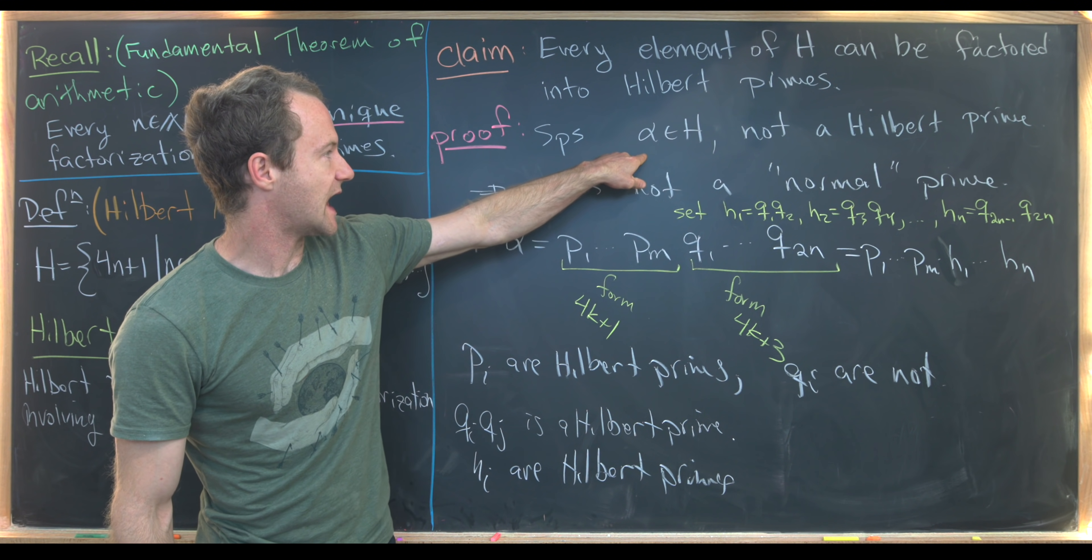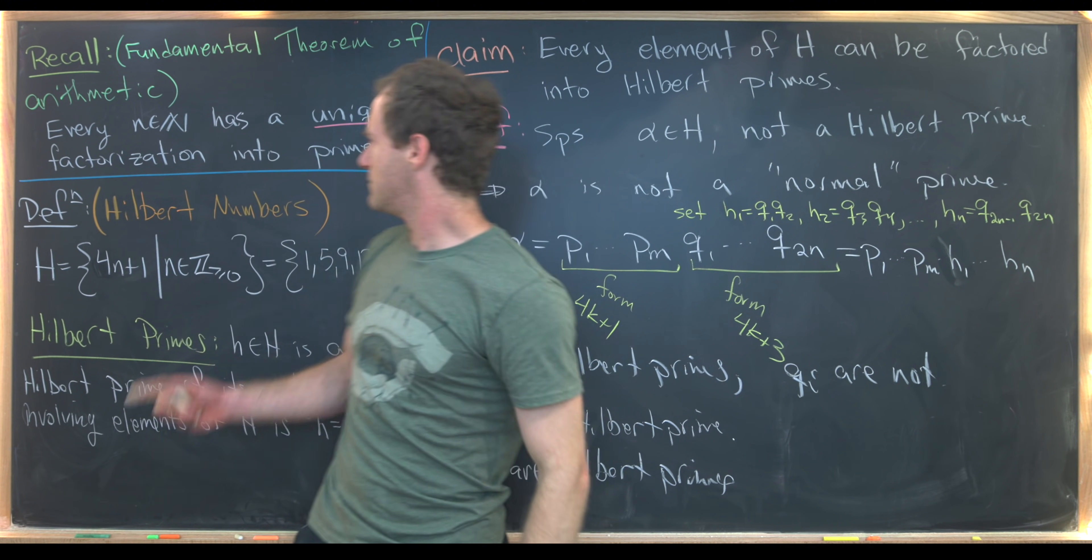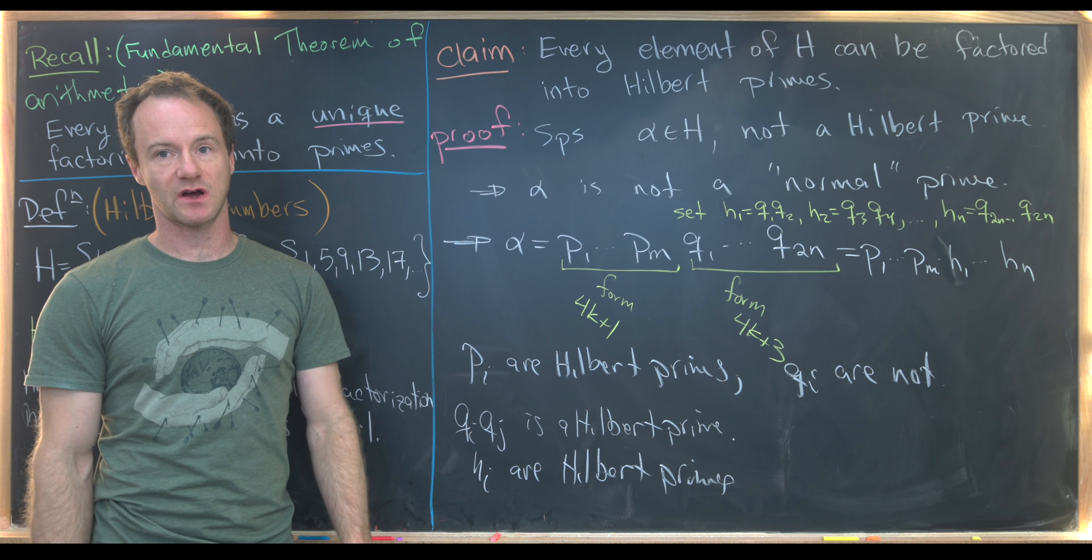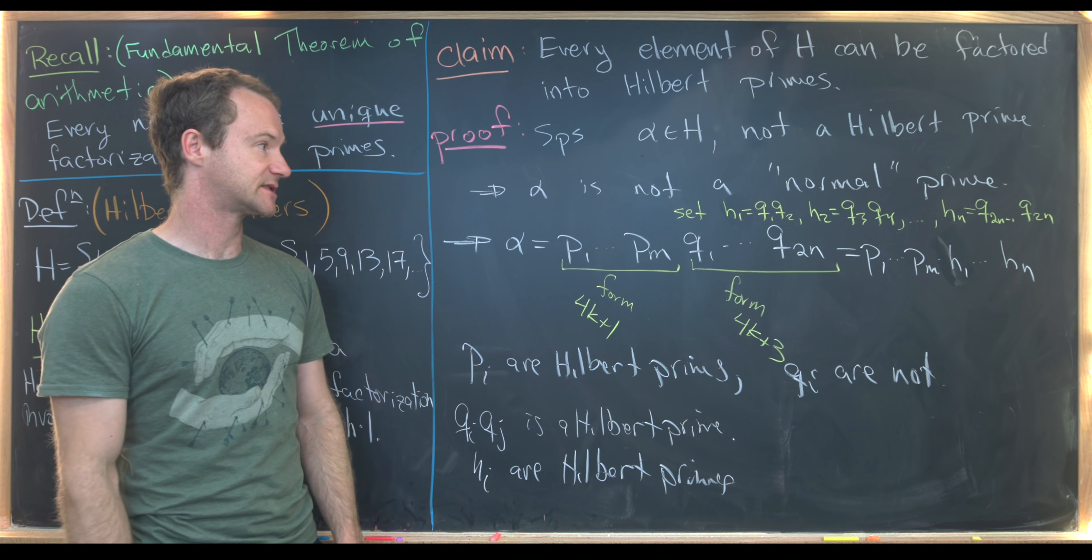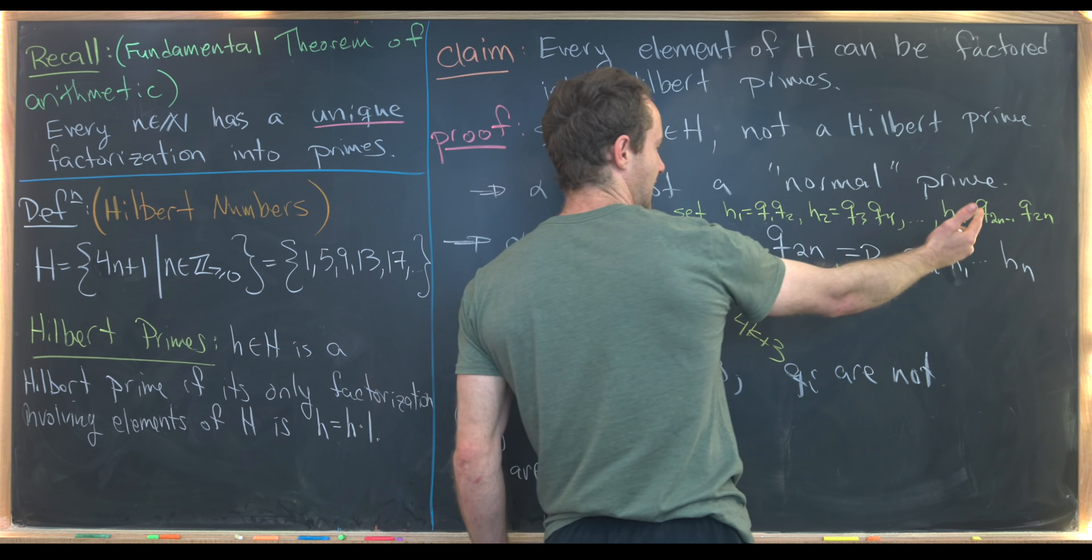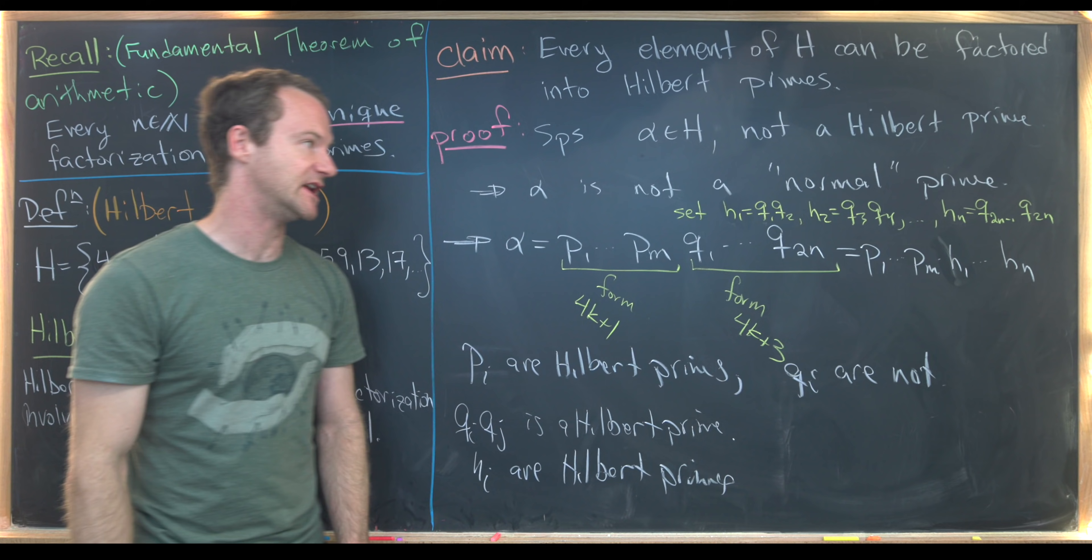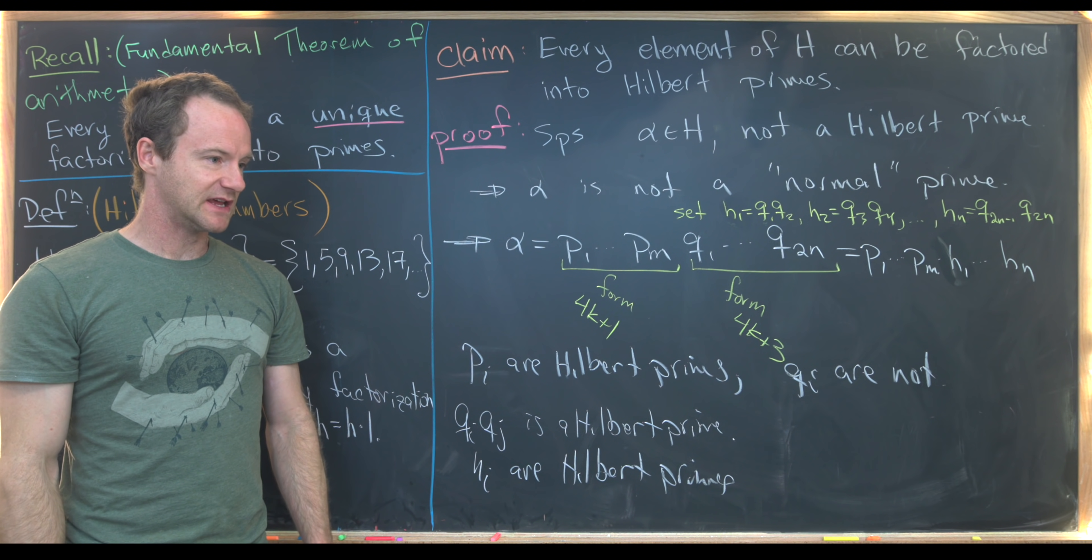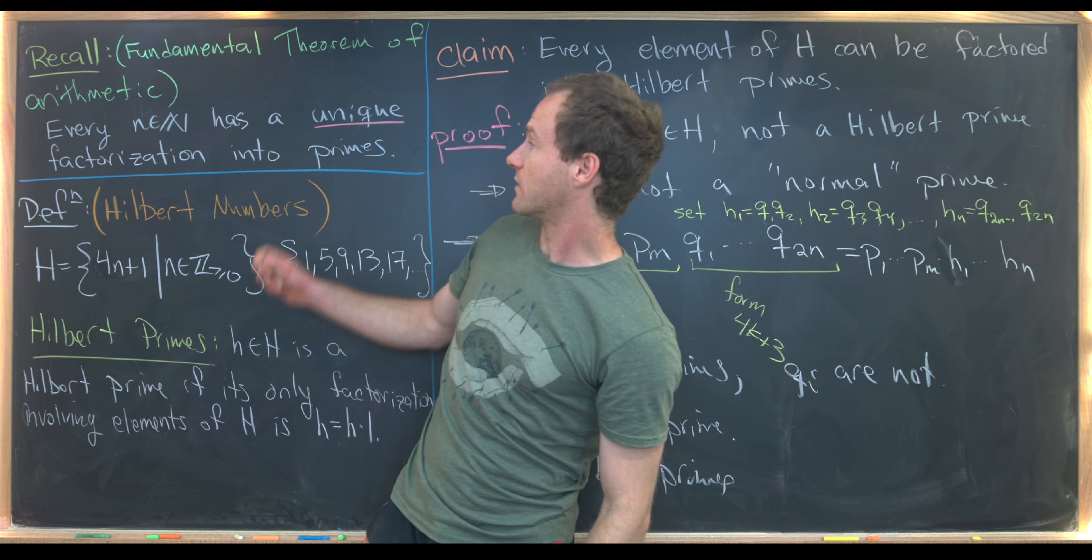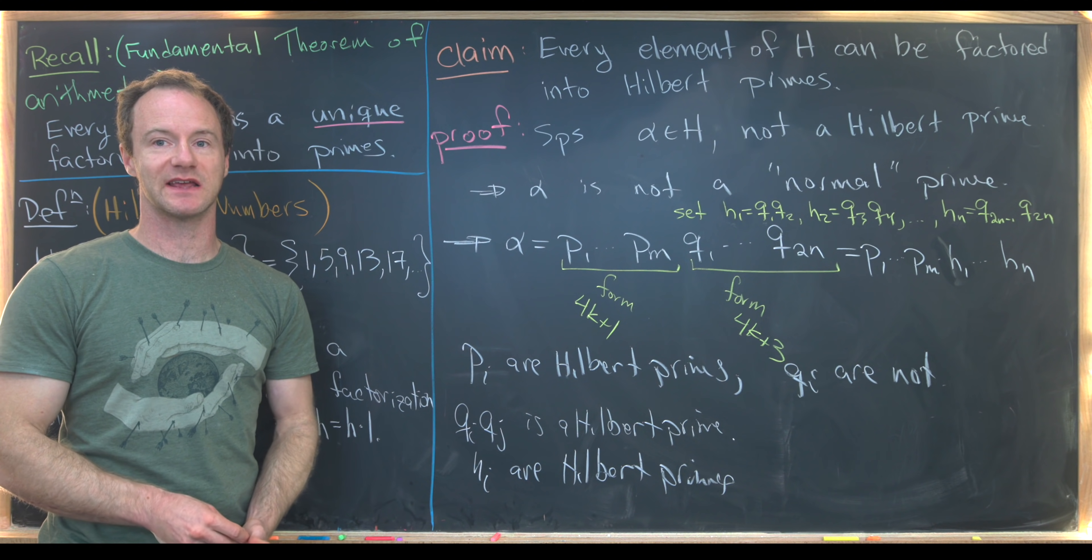But then putting that all together, we see that we've got a factorization of alpha of P1 up to PM times H1 up to HN, and all of those are Hilbert primes. So just to conclude, we took an arbitrary H, which was a Hilbert number, and we factored it into a product of Hilbert primes. So that mimics part of this fundamental theorem of arithmetic. We only have the question of this uniqueness left. But the proof that we just saw really troubles us when we look for uniqueness, because what if we didn't choose H1 to be this product of the first two, but what if we chose H1 to be Q1 times maybe Q17, and then H2 was equal to Q2 times Q34? What if we mixed up the definition of the Hs? Then you can imagine that we would get a different factorization into Hilbert primes, and that's exactly something that is possible here.